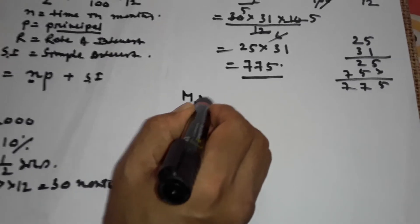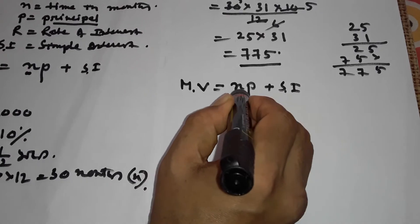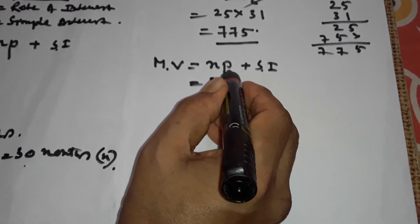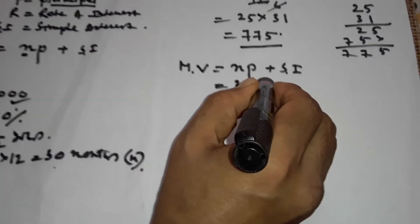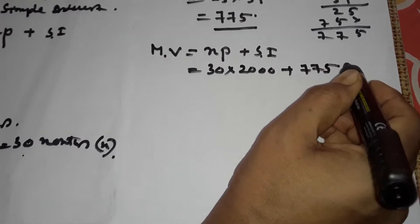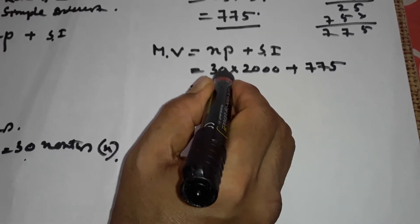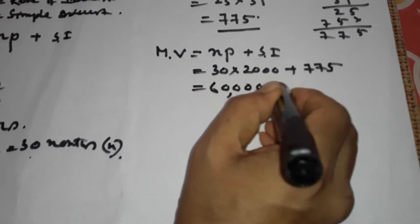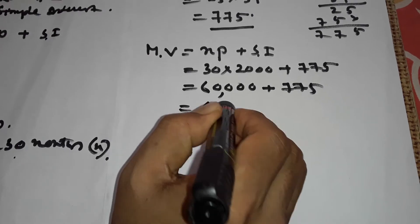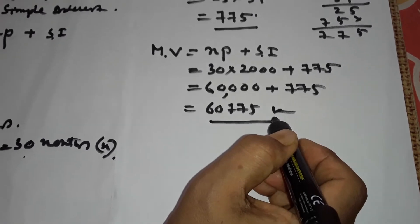After 2 and 1/2 years, find the maturity value. Formula: MV = n × P + SI. n = 30 months, P = ₹2000, so 30 × 2000 = ₹60,000. Plus SI = ₹775. Therefore, MV = ₹60,775.